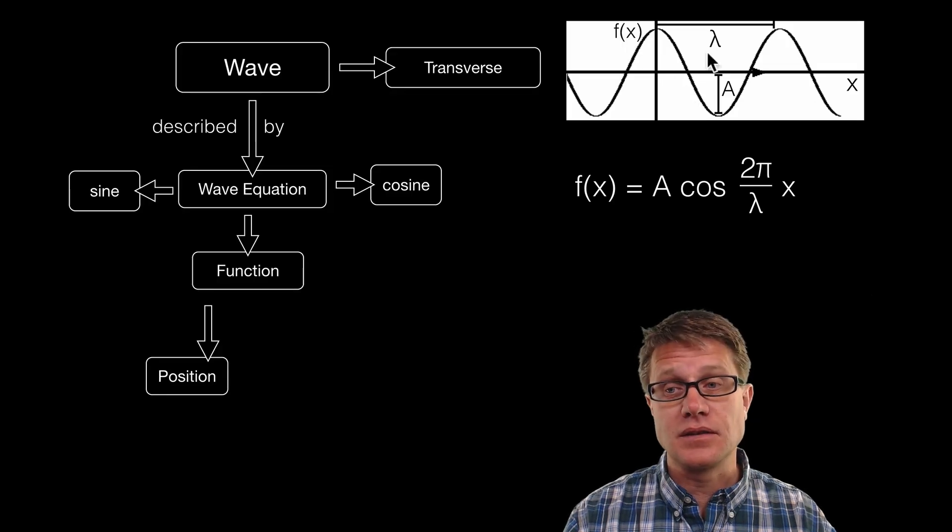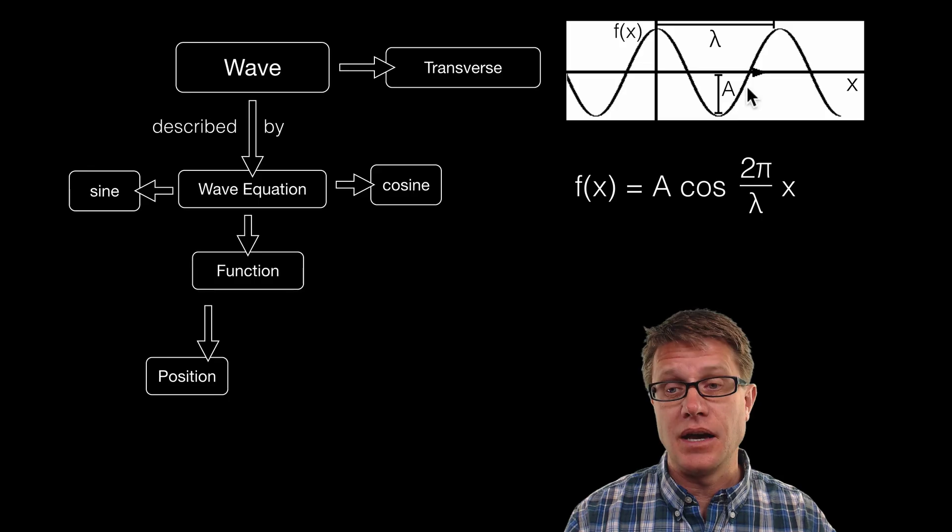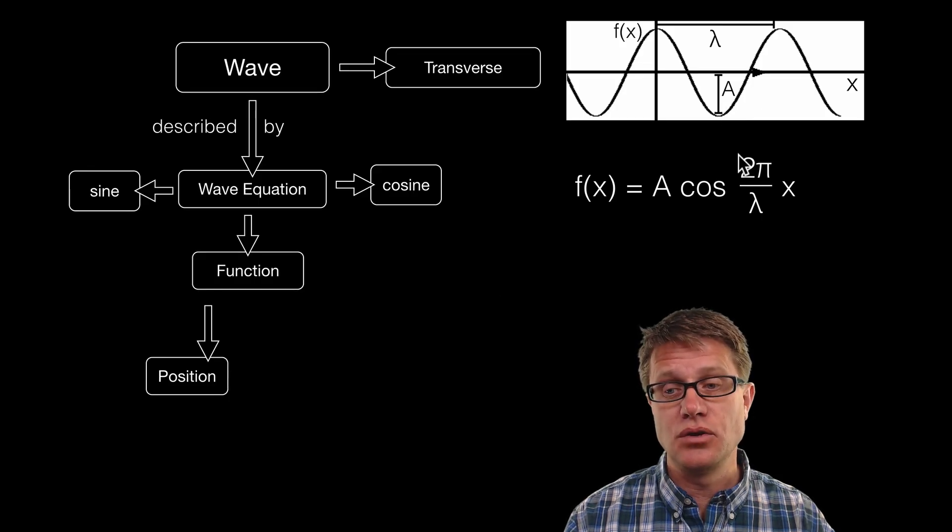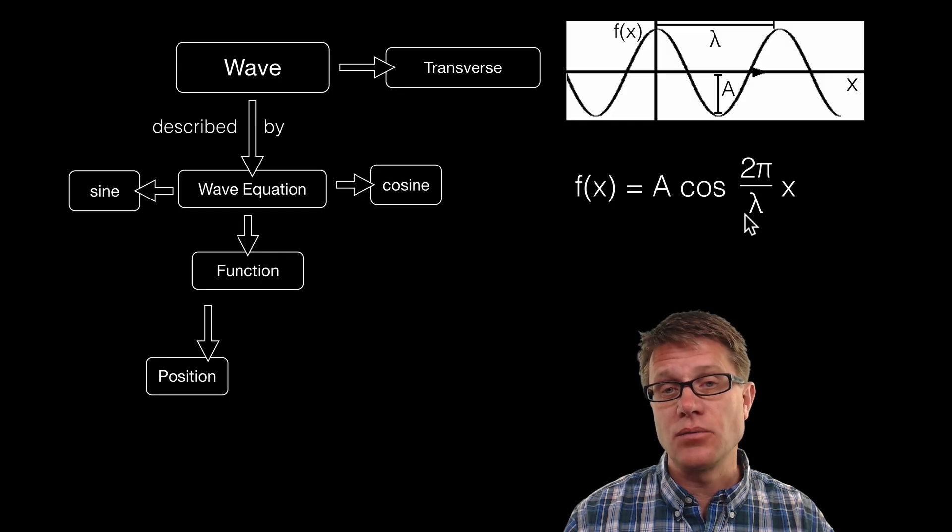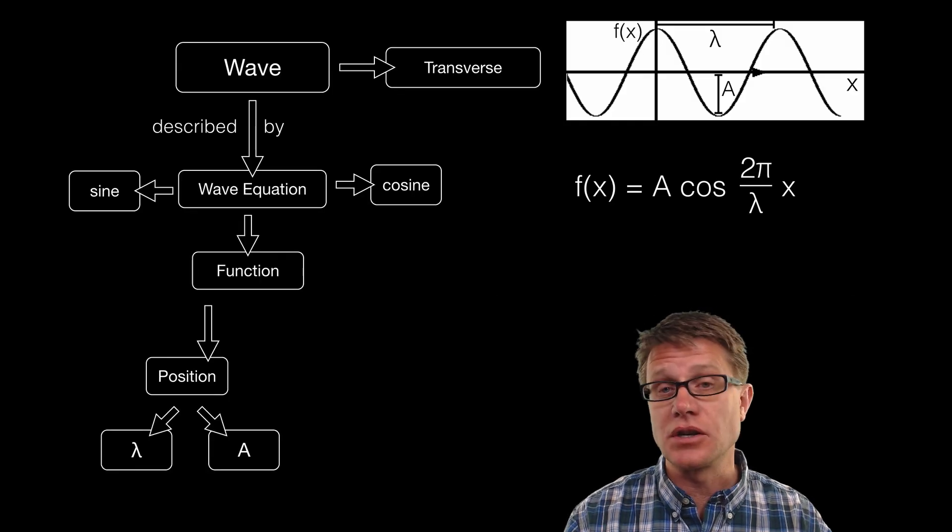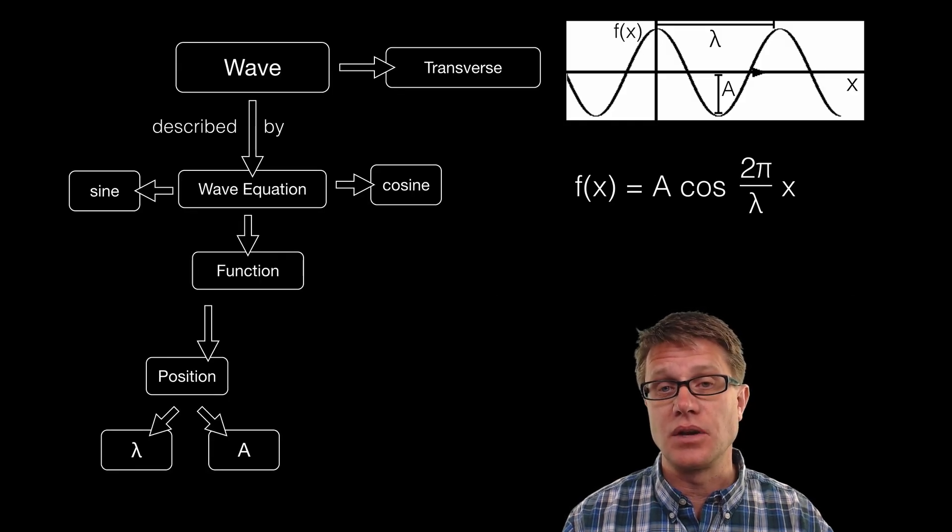And so this would be our equation. So f of x, where x is going to be the position, is equal to A, which is the amplitude of the wave, times cosine of 2π over lambda. Remember lambda is going to be the wavelength. So that wave equation contains the function of position, but it contains amplitude and wavelength.